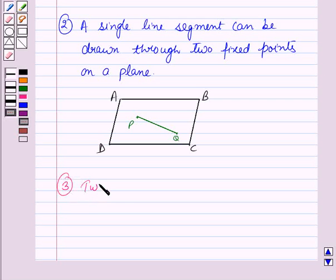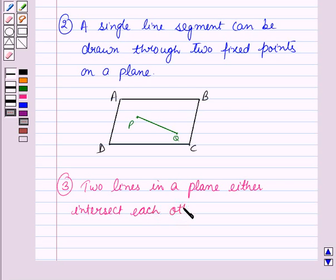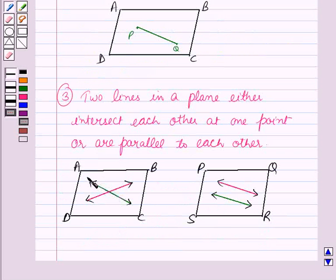And the next property is, two lines in a plane either intersect each other at one point, or are parallel to each other. Now consider the planes ABCD and PQRS. You can observe here that two lines in a plane can either intersect each other at a point, or are parallel to each other.